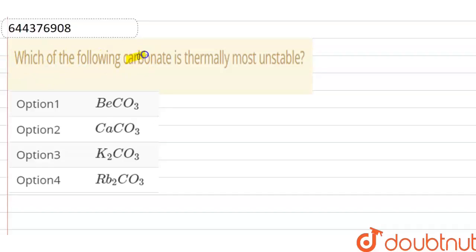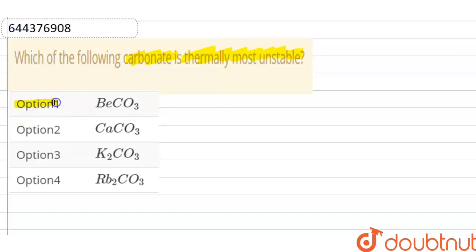Our question is: which of the following carbonates is thermally most stable? Option one is BeCO₃, option two is CaCO₃, option three is K₂CO₃, and option four is Rb₂CO₃.